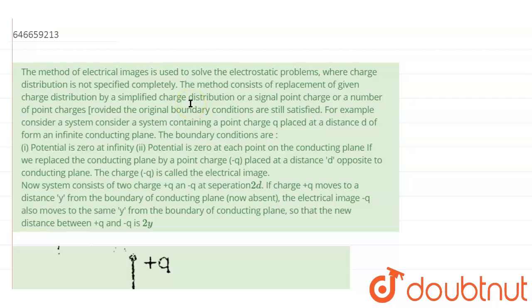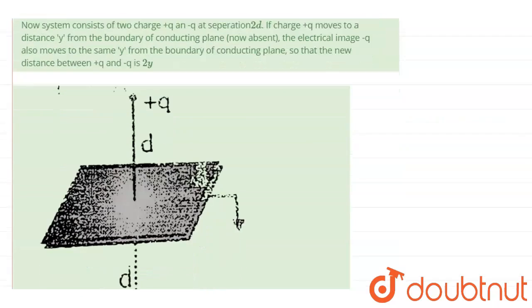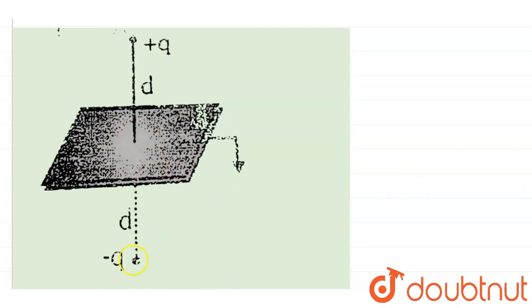are basically telling us about is that sometimes, when the exact distribution of charge is not given, what we can do is we can simplify the problem by assuming a virtual charge